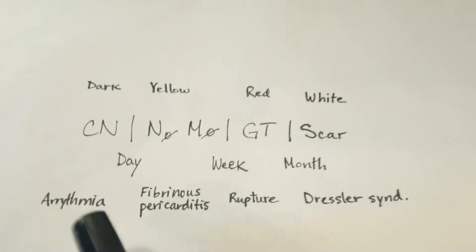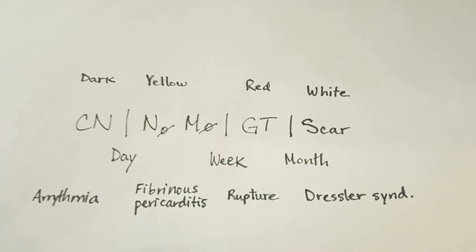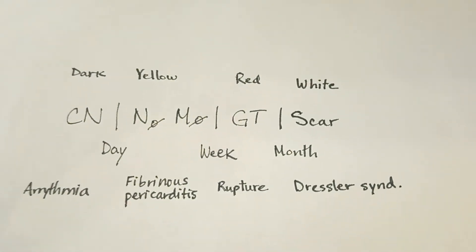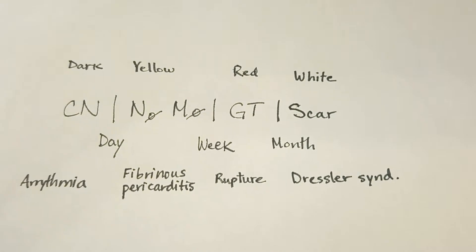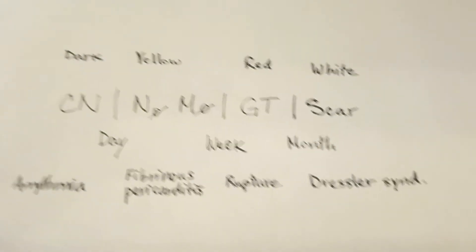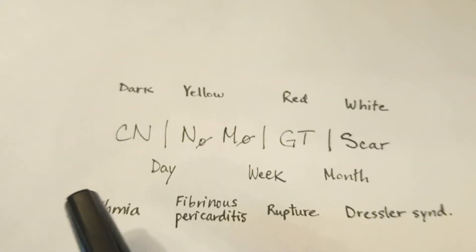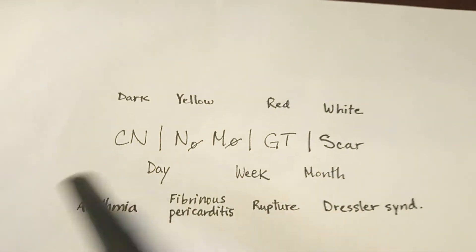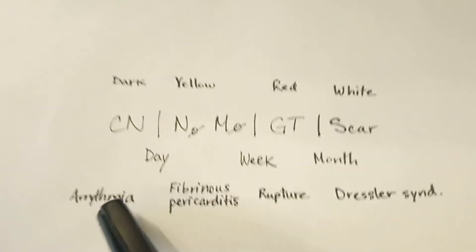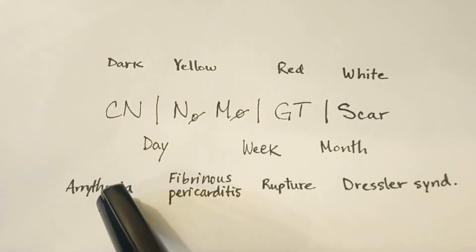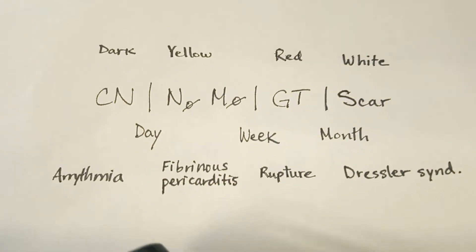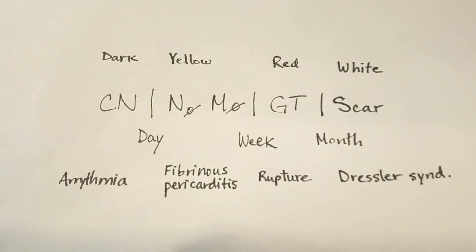This line summarizes a key event or complication you should worry about around each event. Within the first day, we're very worried about arrhythmias because they can cause sudden death in the patient.